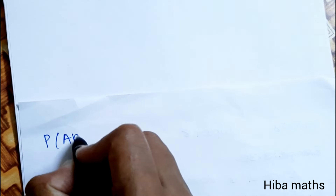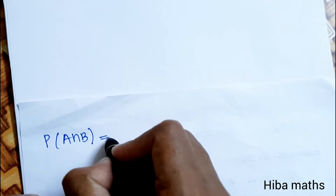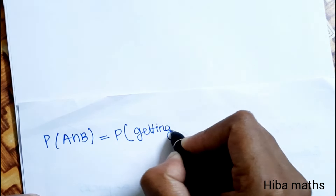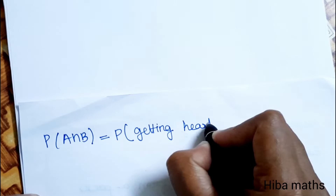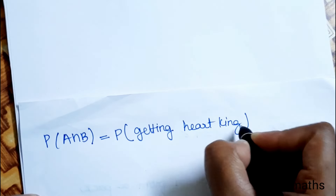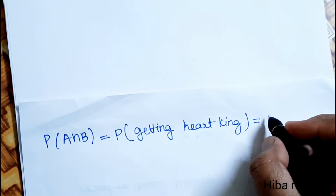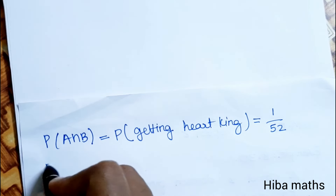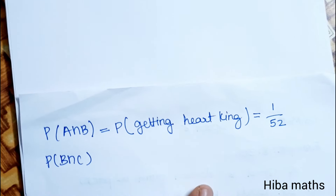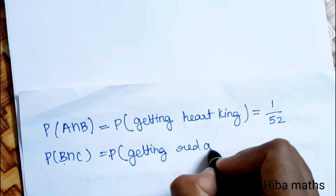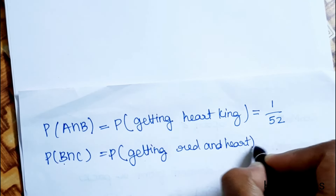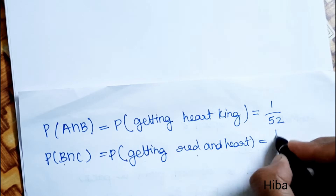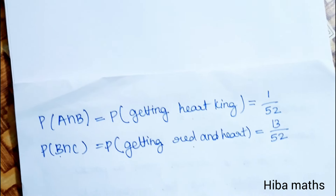First, P(A intersection B) means getting a king that is also a heart. There is only one king of hearts, so P(A intersection B) = 1 by 52. Next, P(B intersection C) means getting a red heart card. All hearts are red, so P(B intersection C) = 13 by 52.